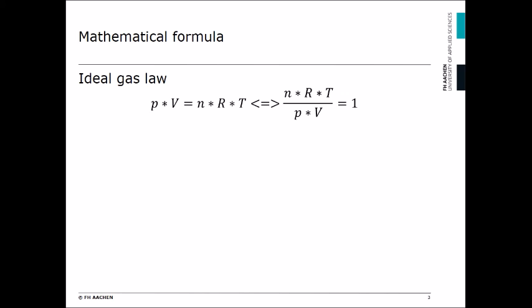P, the pressure, multiplied by V, the volume, equals n, the material quantity, multiplied by R, the gas constant, multiplied by T, the temperature. This can be rearranged so that n times R times T divided by p times V equals 1.